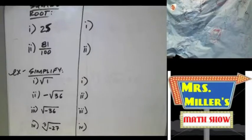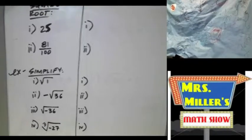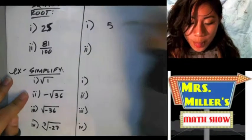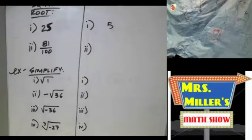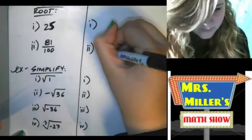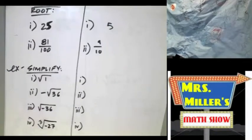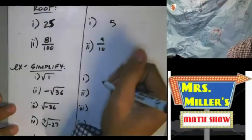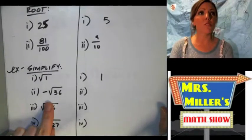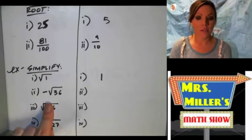Let's get this going. Our first volunteer — ladies first — Alyssa. Everybody give it up for Alyssa. Now we have Rebecca. Rebecca's doing the square root of 81 over 100. Nine over 10. Everybody give it up for Rebecca. Everybody give it up for Aiden. What do we think about the next one — the negative square root of 36? Sloan: negative 6. Everybody give it up for Sloan.